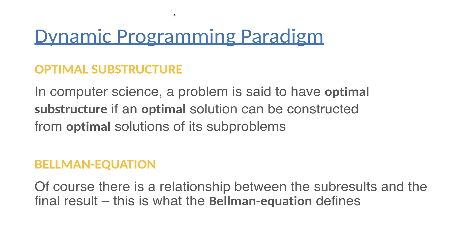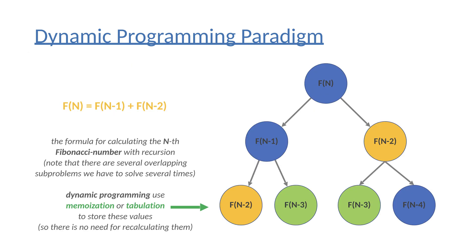What's crucial is that we can use dynamic programming when there are overlapping subproblems. If we calculate the nth Fibonacci number using the naive recursive approach, we calculate the same subproblems over and over again. With dynamic programming, we eliminate these multiple operations and calculate each subproblem only once. This is why dynamic programming is way faster than the naive approach.